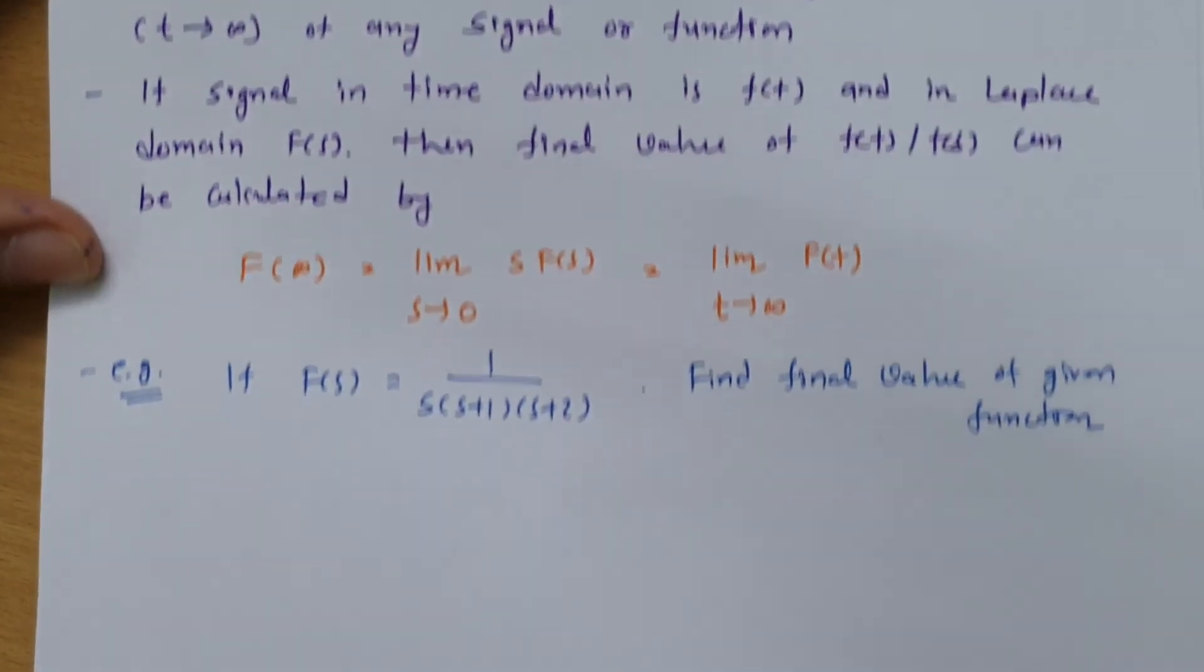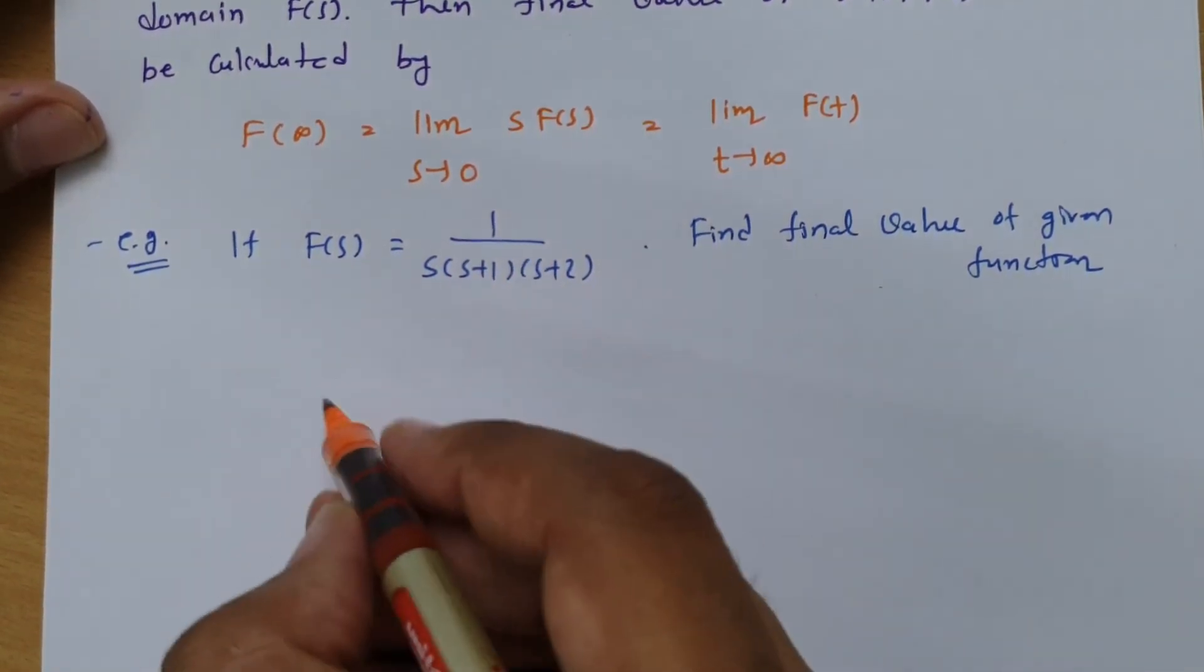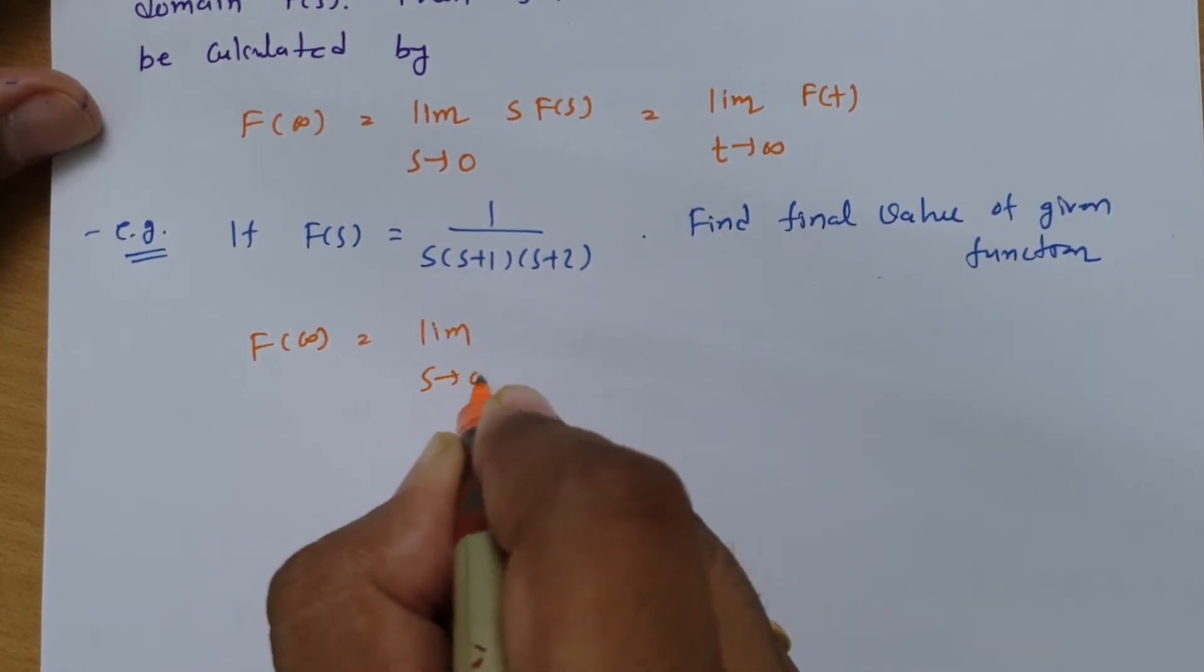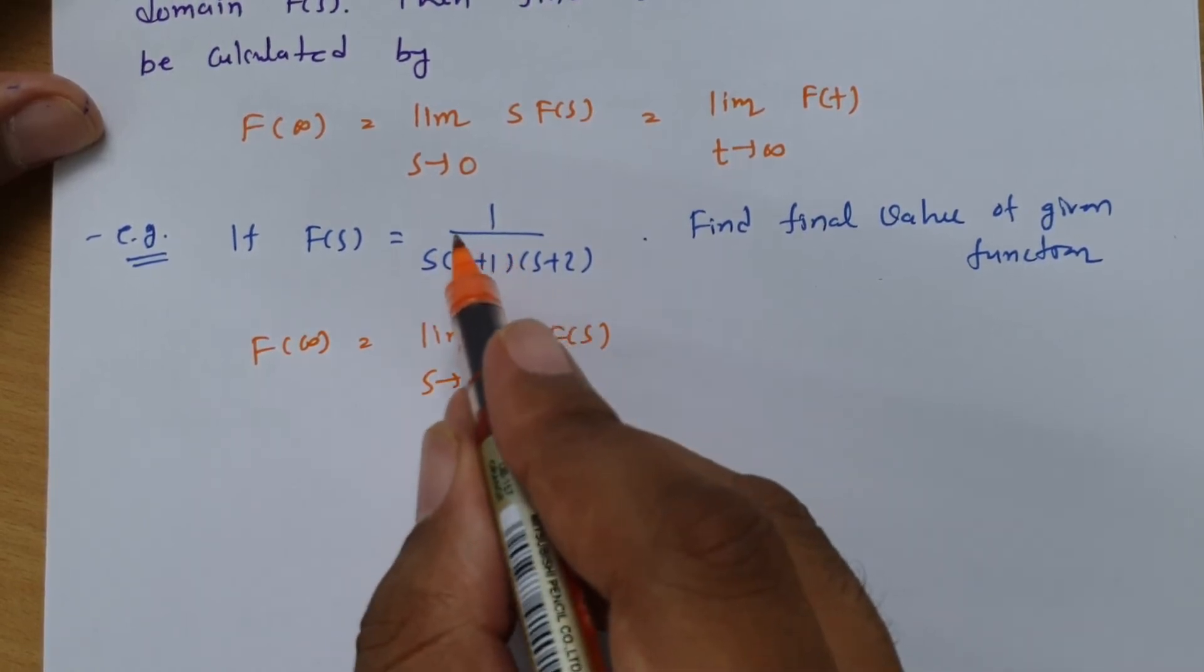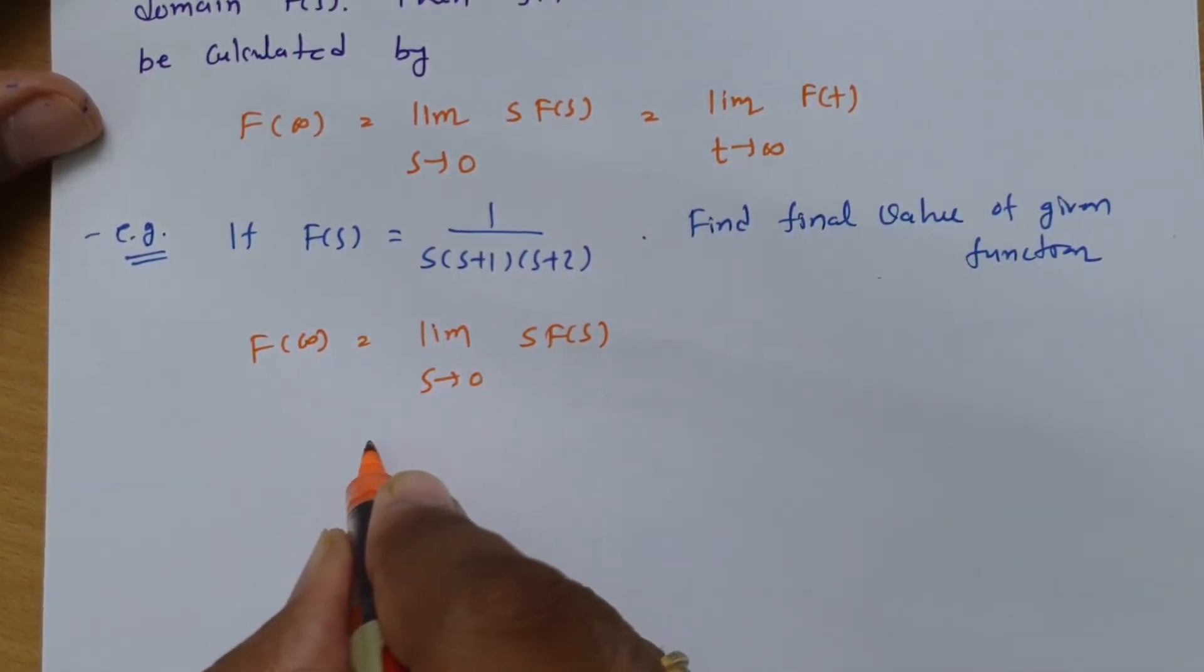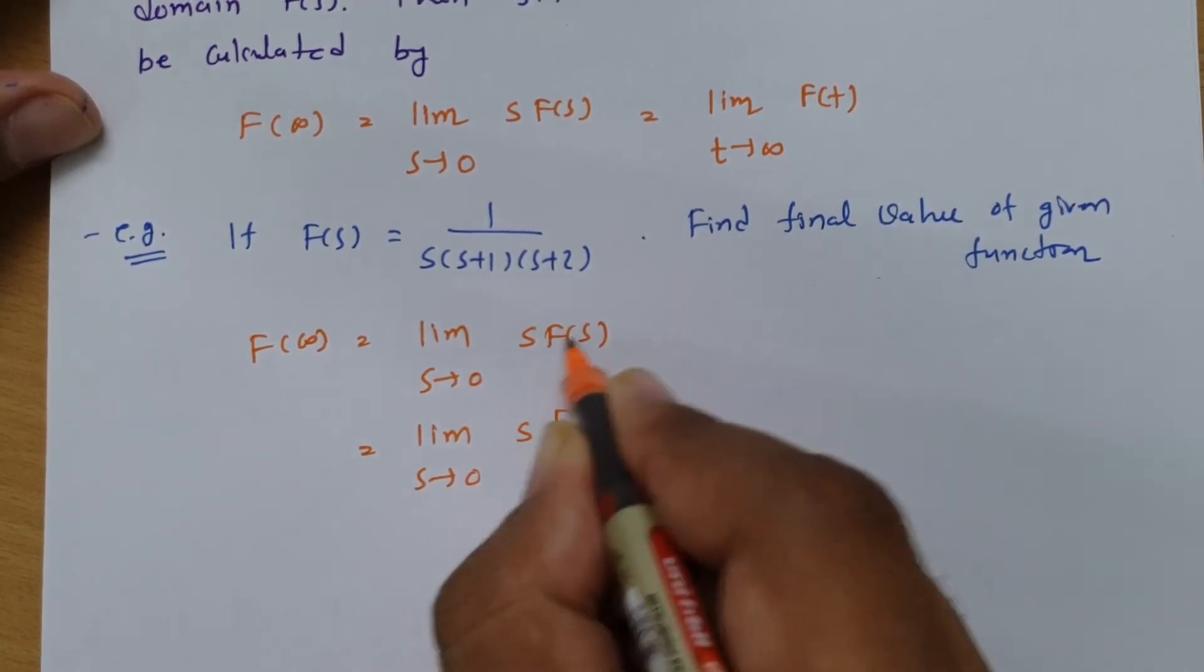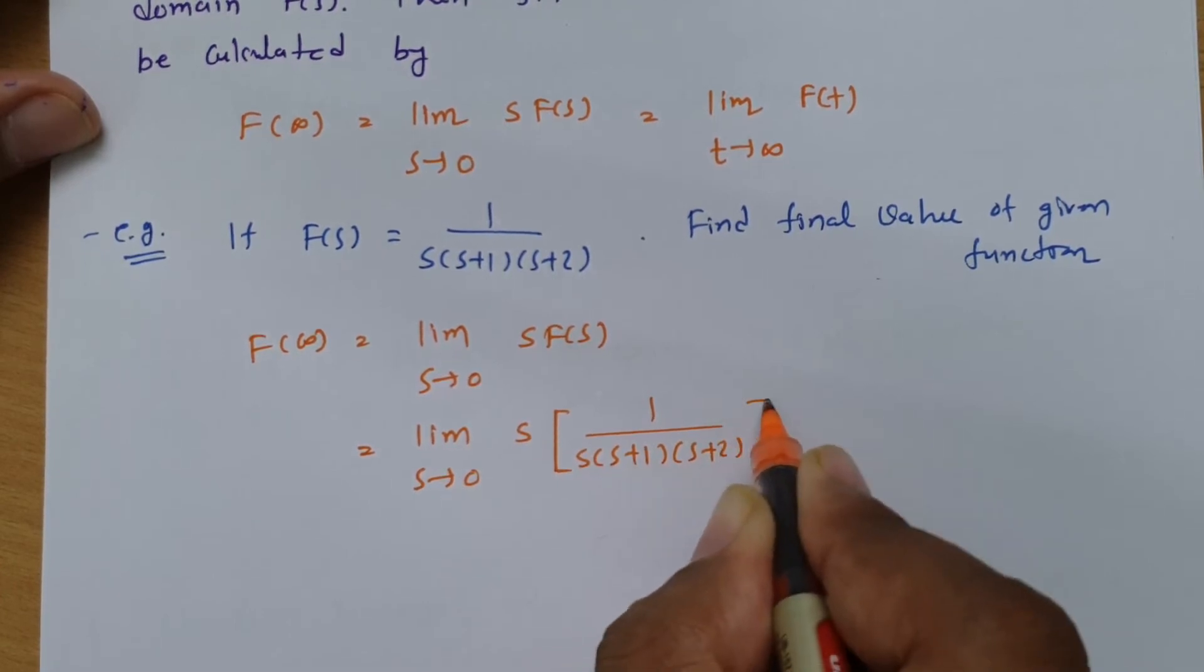Let us calculate the final value of the given function. This is given in terms of s domain. So final value will be limit s tends to 0 of s into F(s), where F(s) is 1 by s(s+1)(s+2). If I substitute this, limit s tends to 0 of s times 1 by s(s+1)(s+2).